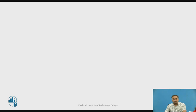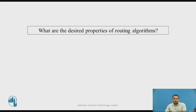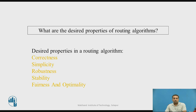Before we proceed to the content, you may pause the video and answer this question: what are the desired properties of a routing algorithm? The desired properties are correctness and simplicity, robustness and stability, fairness and optimality. It should be correct and simple so that it can be easily understood and rectified if any problems arise. It should be robust to device failures, stable, and fair enough to provide transmission chances to each and every router in the network.